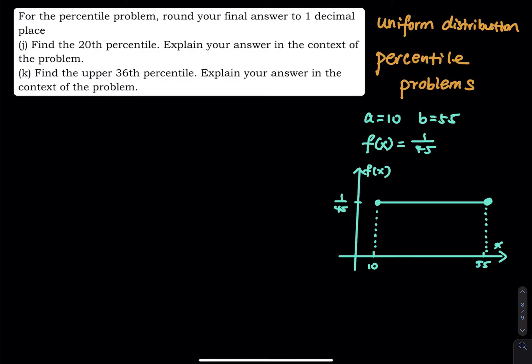This is a continuation of the previous problem. The time in minutes it takes a student to finish lunch is between 10 and 55 minutes, and the time follows a uniform distribution. We have the PDF 1 divided by 45 — you get 45 by taking 55 minus 10. In this video, I will talk about how to find percentile problems.